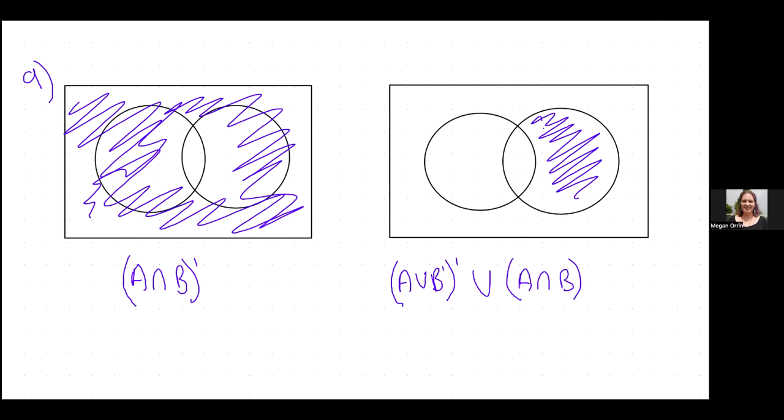Then I have to union that with the intersection of A and B, which is this bit here. The intersection is the bit that they share.